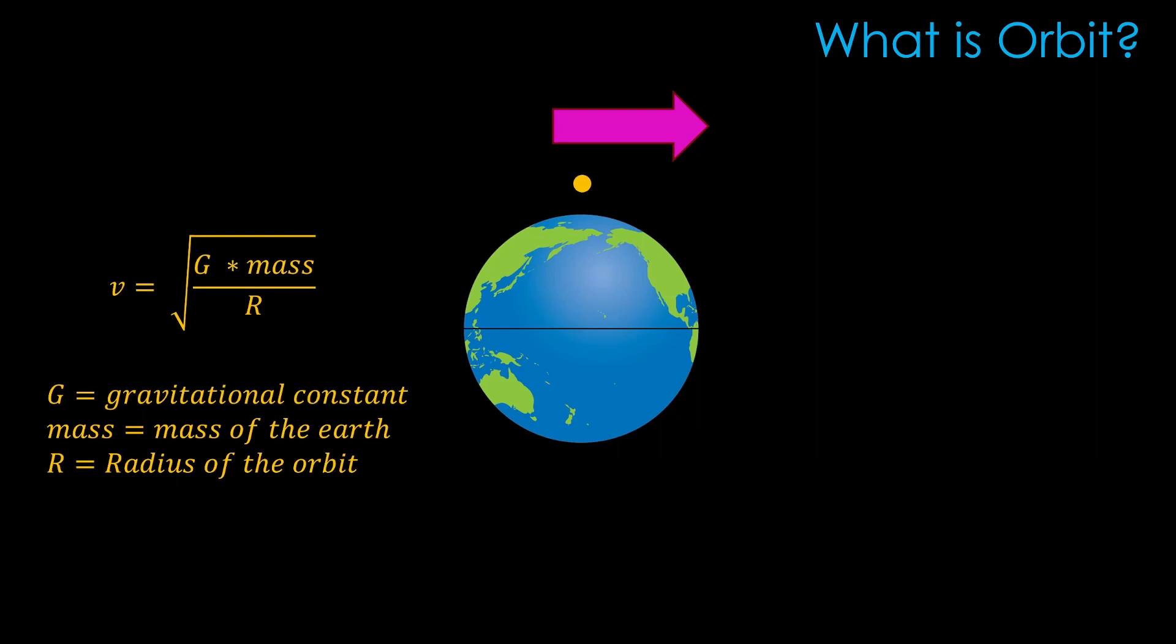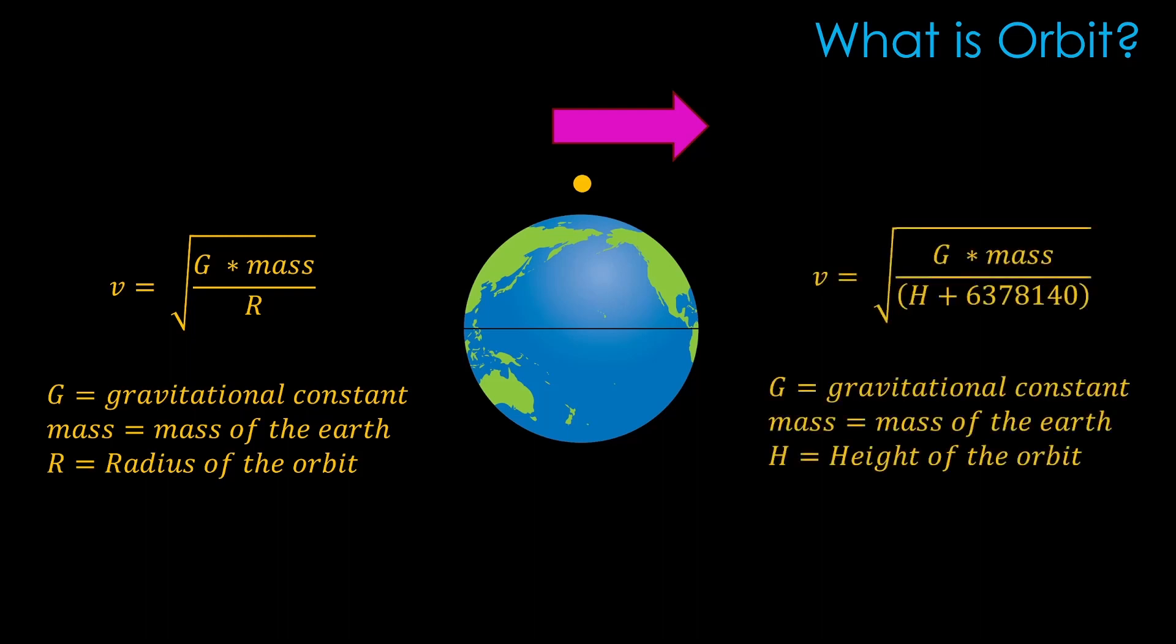Here's a bit of math for those that like that sort of stuff. The required velocity to stay in orbit is given by the following equation, where g is the gravitational constant, mass is the mass of the Earth, and r is the radius of the orbit measured from the center of the Earth. This approach is a bit inconvenient because we measure orbits by how far they are above the surface, so there's an alternate version that uses the orbital height and adds in the radius of the Earth, about 6.3 million meters.